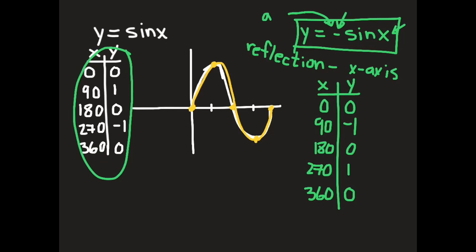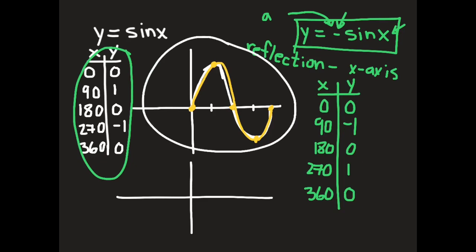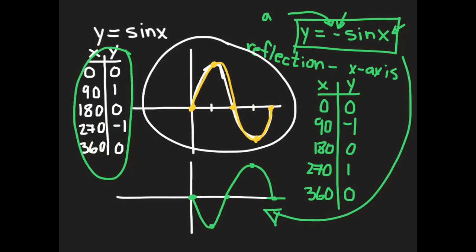Graphing that underneath, it looks much like the sine graph but flipped upside down. It starts at the middle, goes to the lowest point first, then back to the middle, then the highest point, and then back to the middle — following a curve for one full cycle. This is y equals negative sine.